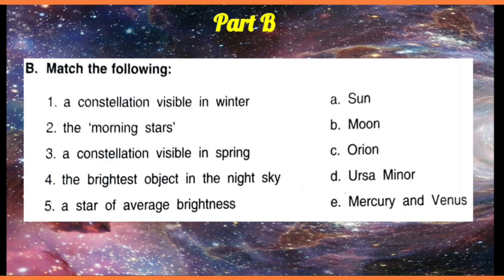A constellation visible in winter season — so in winter season we get Orion. The morning star or evening star — what is it called? Mercury and Venus.